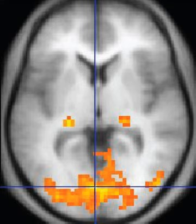An MRI sequence is a particular setting of radiofrequency pulses and gradients, resulting in a particular image appearance. The T1 and T2 weighting can also be described as MRI sequences.